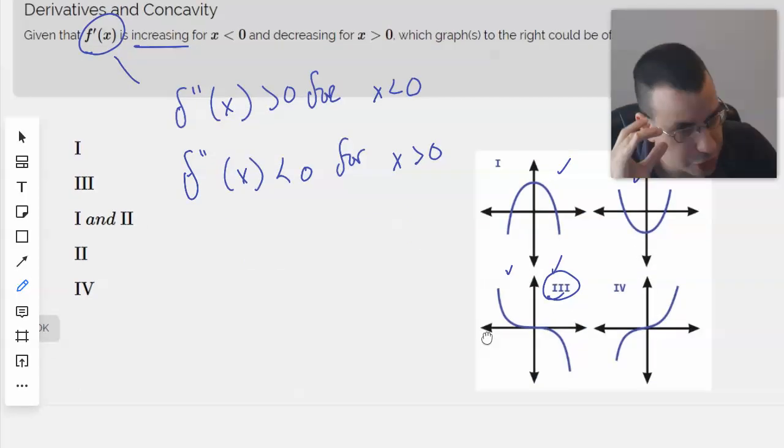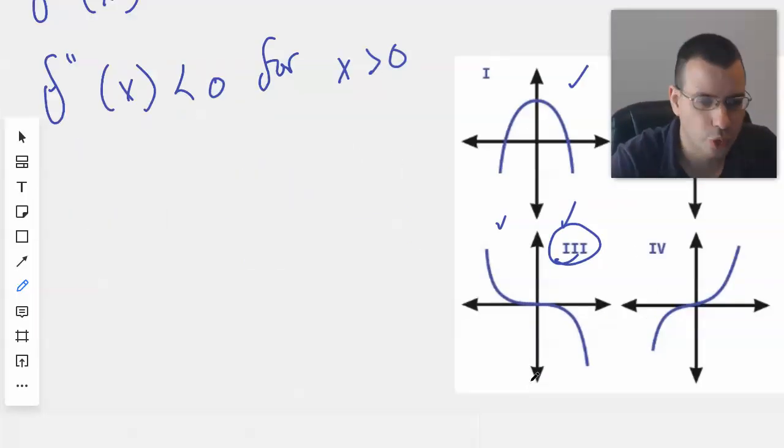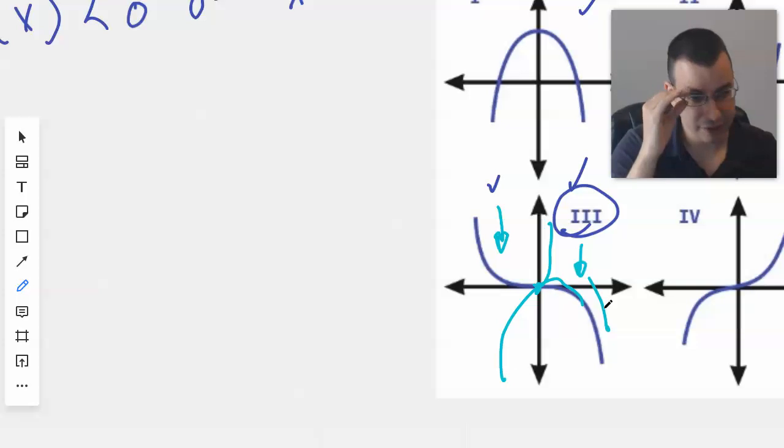And the way I do concavity, like visually, is I do like the hold water idea. Would this hold water? No, it'd fall off this way. It's because there's an inflection point right there. But if you mirrored this to the other side, then yes, it would. If you mirrored this one to the other side, then the water would run off. And if it can't hold water, then it's concave down. If it can hold water, then it's concave up. So concave up, concave down.